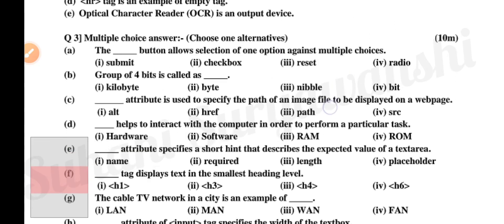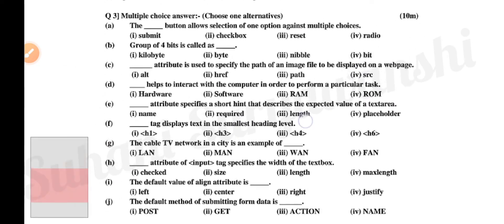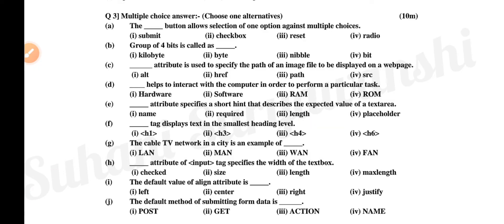Next, question 3, choose any one alternative. It's a madhya paan kahis option lan aahe. A aahe, the dash button allows selection of one option against multiple choices: submit, checkbox, reset, radio. B aahe, group of four bits is called as kilobyte, byte, nibble, bit. C, dash attribute is used to specify the path of an image file to be displayed on a web page: alt, href, path, source. D, dash helps to interact with the computer to perform a particular task: hardware, software, RAM, ROM.